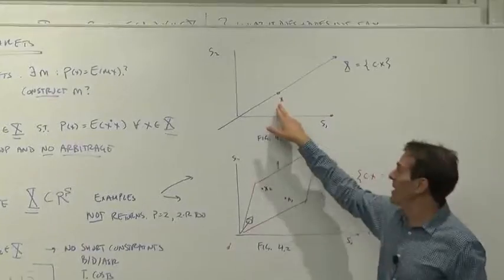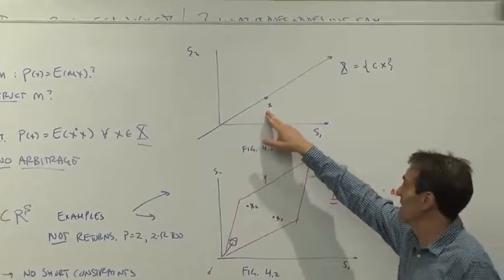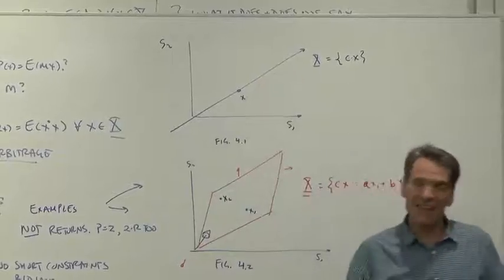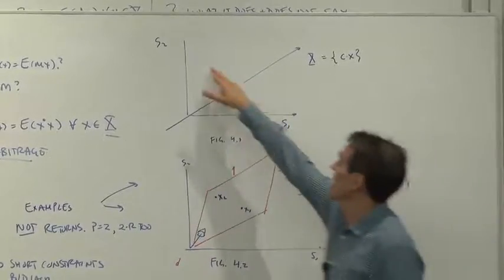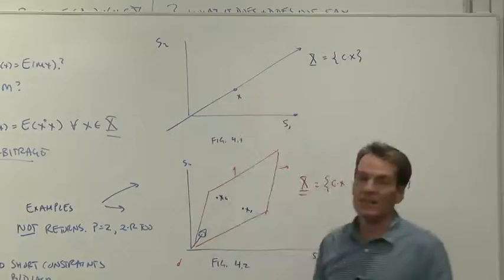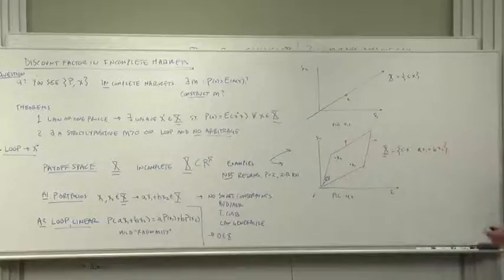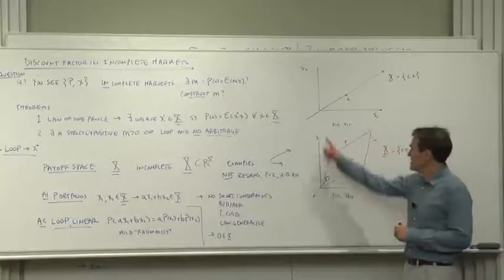Two examples. Here is when there are two states of nature. Suppose there's only a single payoff x, nothing else is traded. Then the payoff space is, well, you can buy more or less of that thing, but you can't buy anything else. You can't get your way here. So that's a market that is incomplete because that's the payoff space.